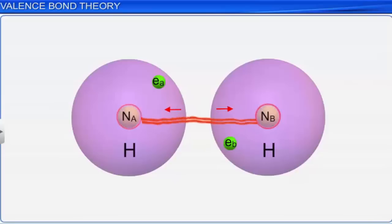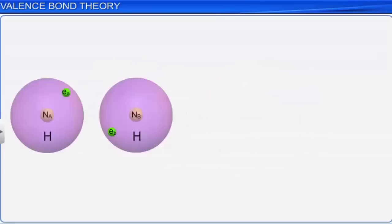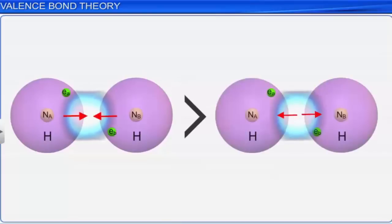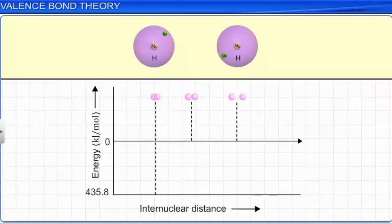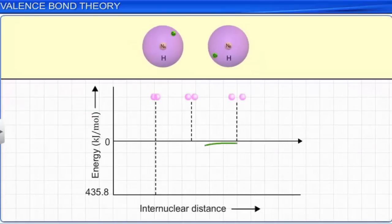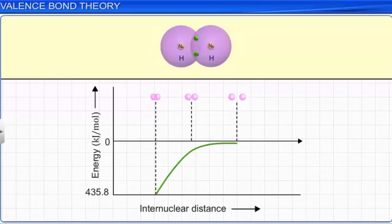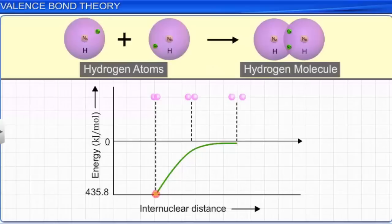Experimentally, it is found that the magnitude of the new attractive forces is more than that of the repulsive forces. As a result, the potential energy decreases as the two hydrogen atoms approach each other. Ultimately, a stage is reached where the nuclei remain at an optimum distance such that the net force of attraction balances the net force of repulsion. At this stage, the system acquires minimum energy and the two hydrogen atoms are said to be bonded to form a stable molecule.